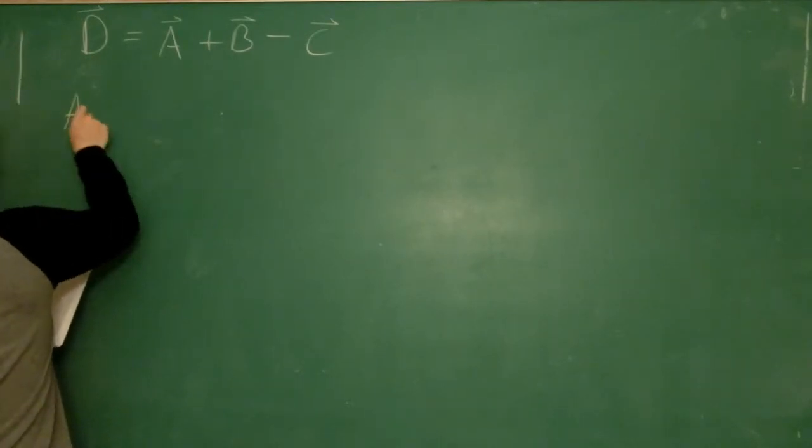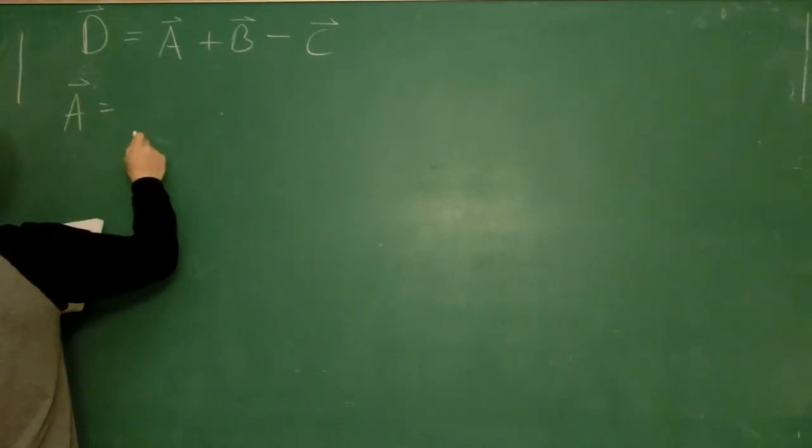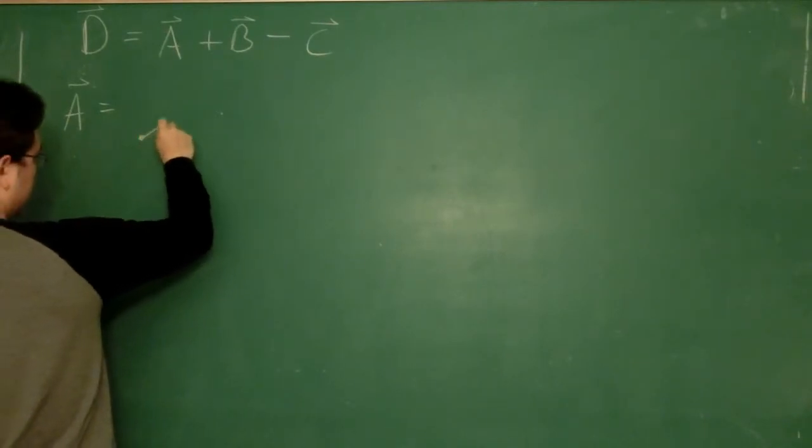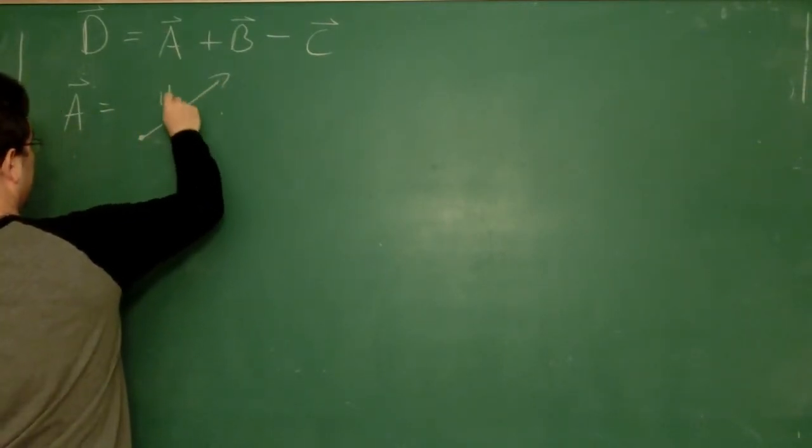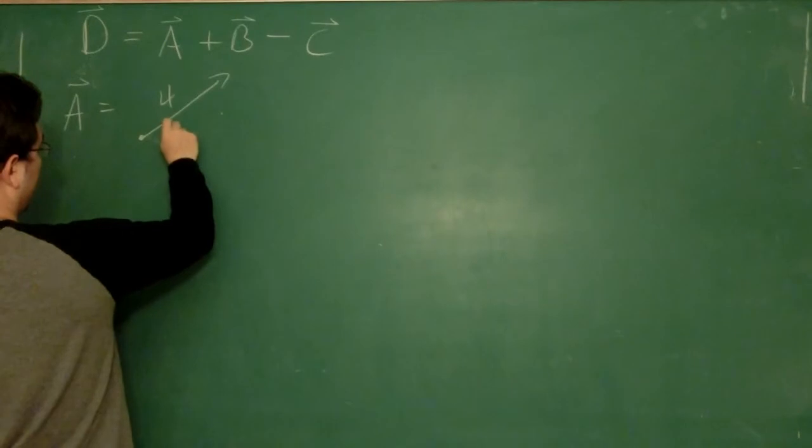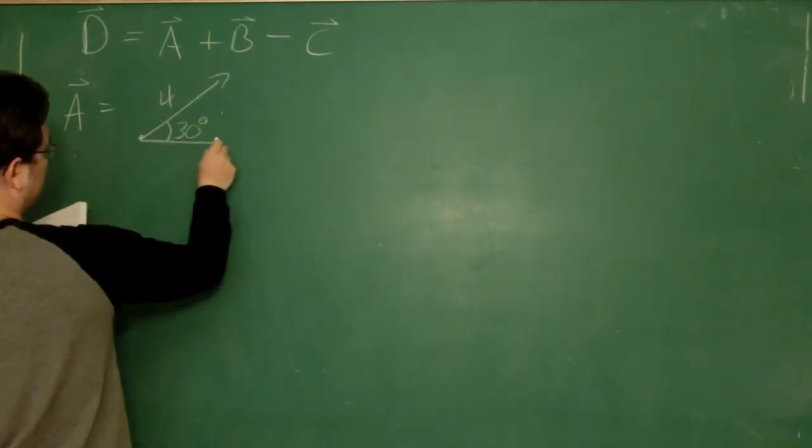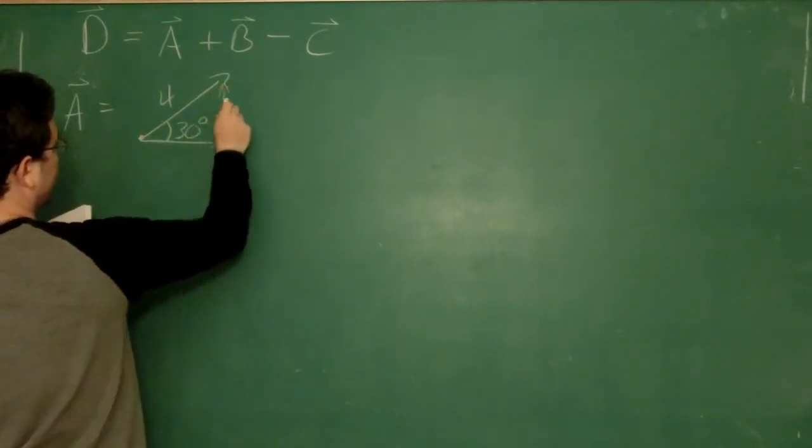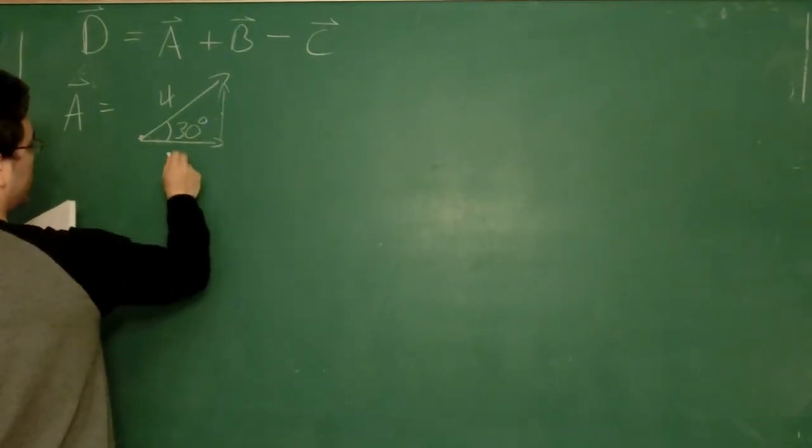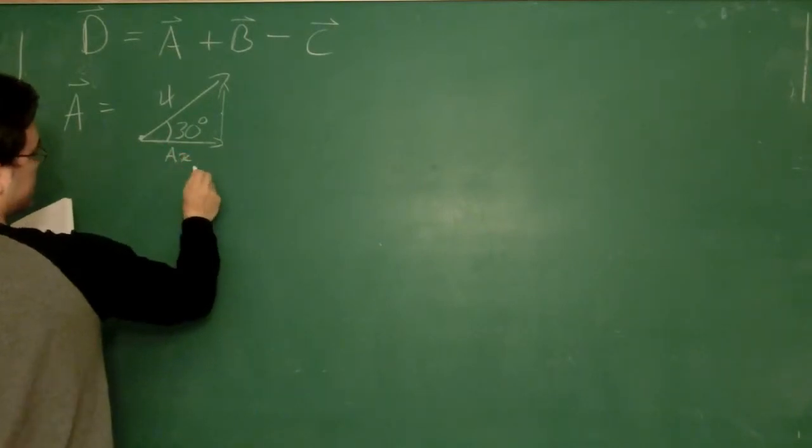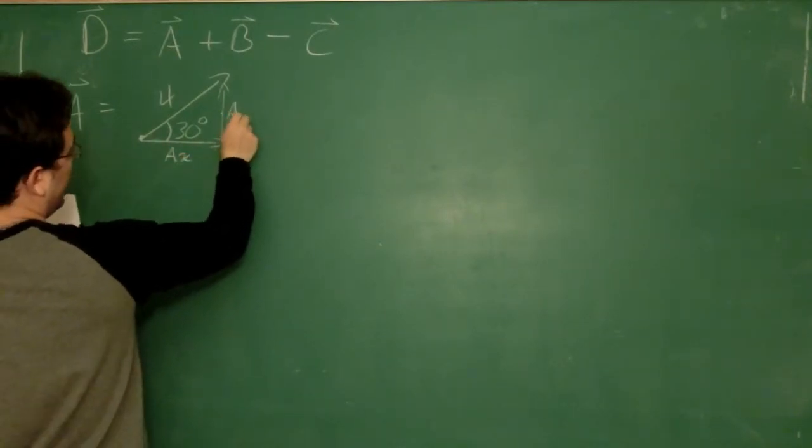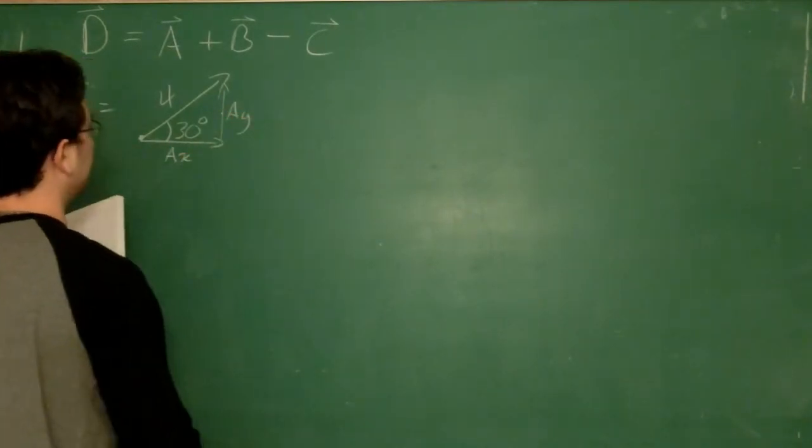So vector A looks like this. It has a magnitude, a total length of 4, and it has an angle at 30 degrees with the horizontal, the positive x direction. So I've got A sub x, my x component of A, and A sub y, and we'll see if we can find those.